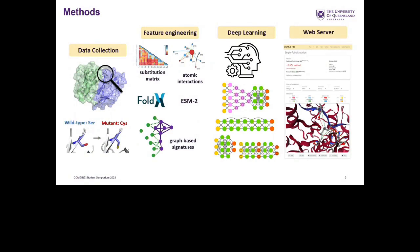This is the overall methodology workflow. Protein-protein complex structures were downloaded from the Protein Data Bank and mutant structures were generated using MODELLER. A set of features capturing different aspects of the proteins were generated, including substitution matrix features, atomic interaction features, physical energies from FoldX, embeddings from the protein language model ESM2, and the graph-based signatures. All features are input into the deep learning model, hyperparameters and layers were tuned based on cross-validation performance, then validated on blind test datasets, and the model was deployed to a web server.